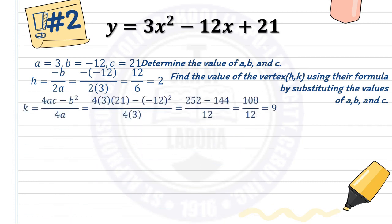Next, find k using k equals 4ac minus b squared over 4a. With a = 3, b = negative 12, and c = 21: 4 times 3 times 21 minus negative 12 squared over 4 times 3. That gives 252 minus 144 over 12, which is 108 divided by 12. So k is 9.